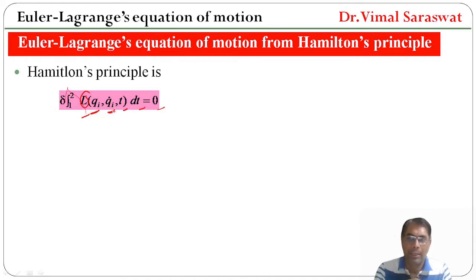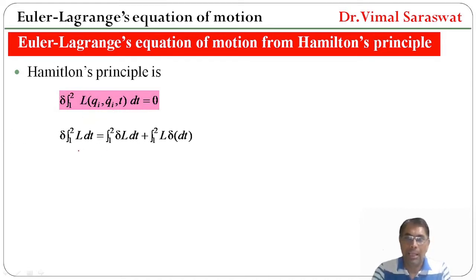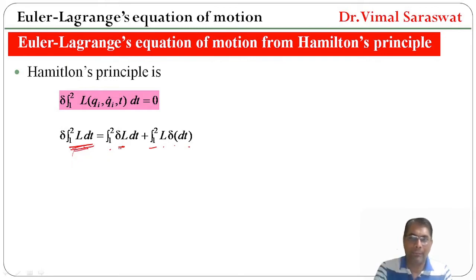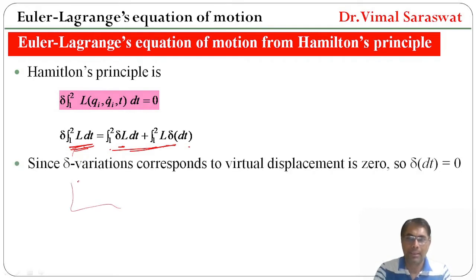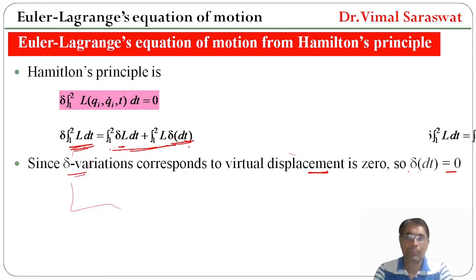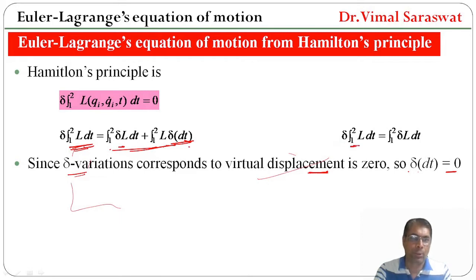Now if we apply the delta variation, then δ∫₁²L dt = ∫₁²δL dt + ∫₁²L·δ(dt). We differentiate using the product rule. Since delta variation corresponds to virtual displacement, δ(dt) = 0, so that second term vanishes. Therefore δ∫₁²L dt = ∫₁²δL dt, and since this equals zero, we get ∫₁²δL dt = 0.